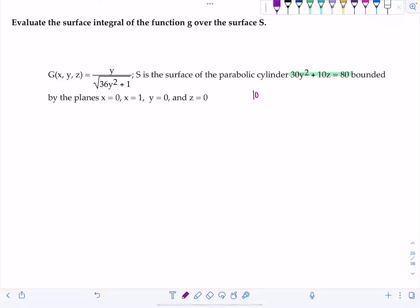So let's start off and do that. So 10z equals 80 minus 30y squared. So z equals 8 minus 3y squared.